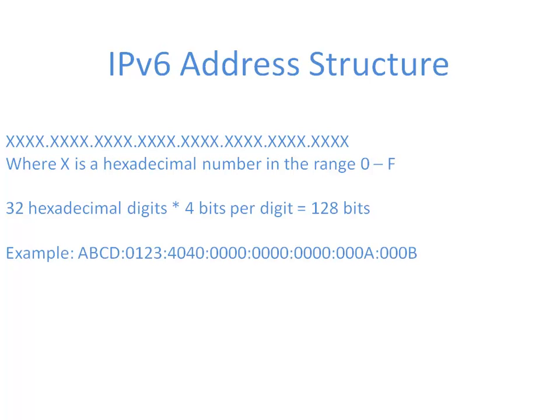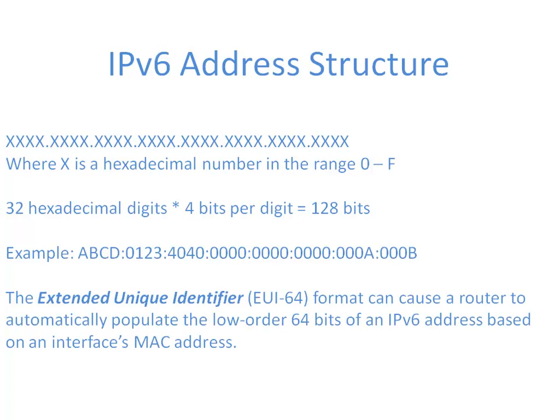Here's an example of what that address might look like. We have groups of 4 hexadecimal digits separated by colons, with 8 of these fields separated by colons. This could be a bit unwieldy to deal with — a lot of hexadecimal digits to assign and potentially error-prone. You might want to check out something called the EUI64 format, the Extended Unique Identifier. This can cause the router to automatically populate the rightmost, low-order 64 bits in an IPv6 address based on the router interface's MAC address, so we don't have to make up that part of the address.